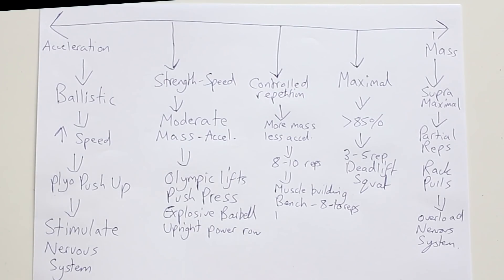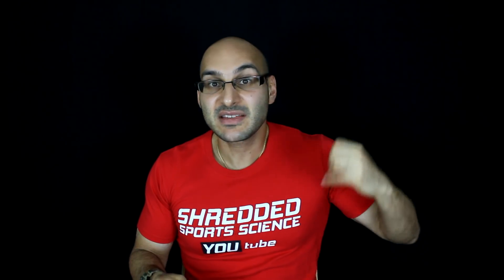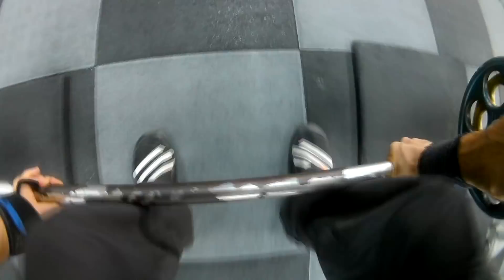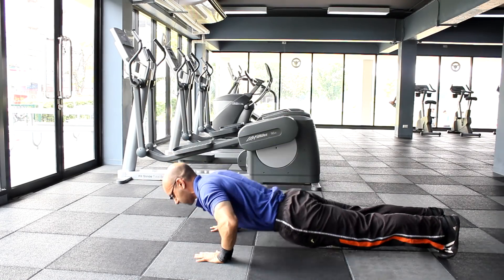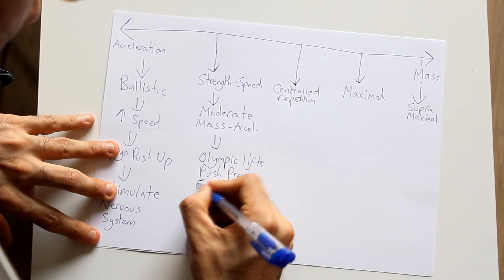We can categorize exercises in terms of mass and acceleration on a continuum. At one end are acceleration-dominant exercises — ballistic exercises, speed exercises. At the other extreme are mass-dominant exercises like rack pulls and heavy one-rep-max deadlifts. In the middle we have the strength-speed category, which is Olympic lifting, where you have a moderate weight and acceleration.